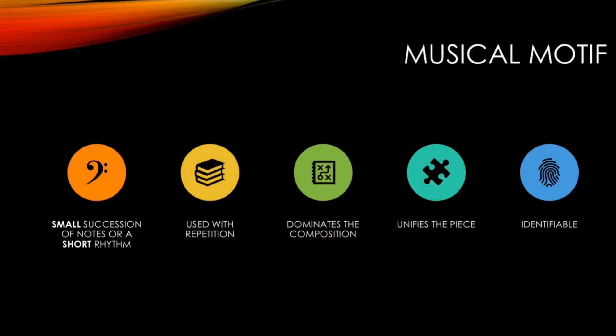So how does this apply to music? In music, a motif is a small succession of notes or a short rhythm. The important thing to note is that it is small. It is used repetitively to build phrases and passages in the piece. When a motif is used well, it dominates the composition and becomes identifying. Sometimes the motif repeats as a direct copy; sometimes it is written in variations or further developed.